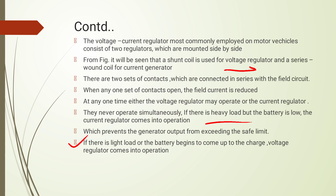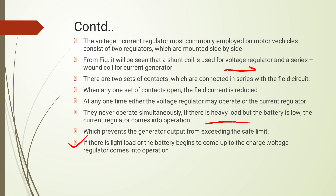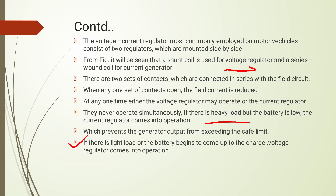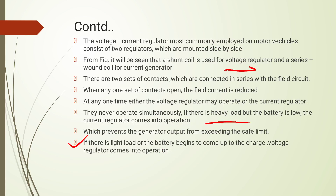The voltage regulator is most commonly employed in motor vehicles. We have two regulators side by side — a shunt coil for voltage regulation and a series coil for current regulation. The two sets of contacts are in series with the field circuit. Under heavy load conditions, the current regulator provides a safe limit.